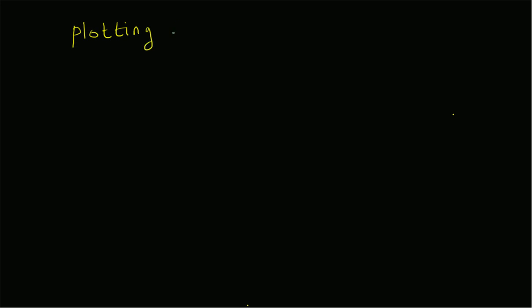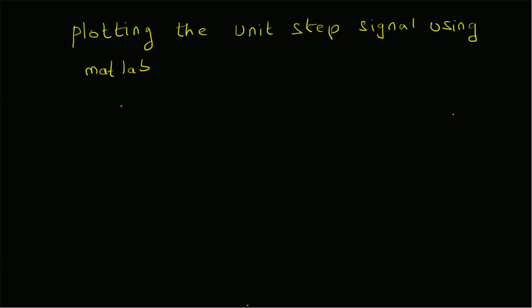Hello, welcome. In this short video we will learn how to plot a basic signal such as the unit step function using a computational tool such as MATLAB. The definition of the unit step signal we are going to look at is: u(t) is equal to one for values of t greater than or equal to zero, and zero for t less than zero.